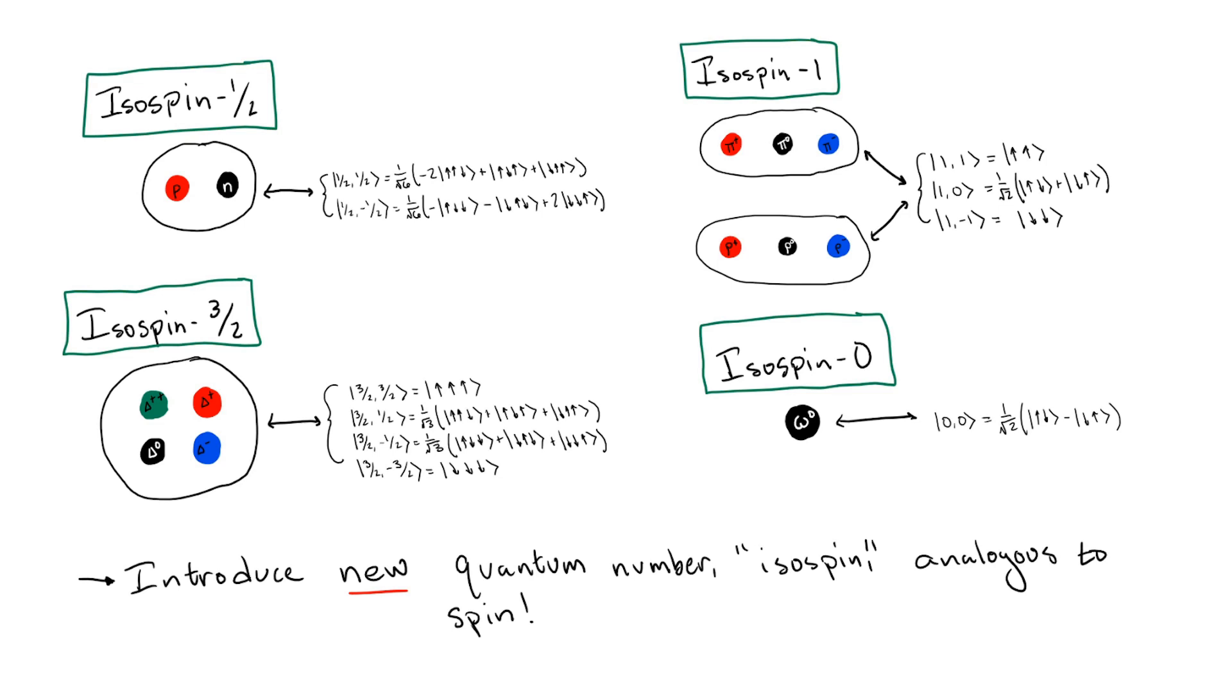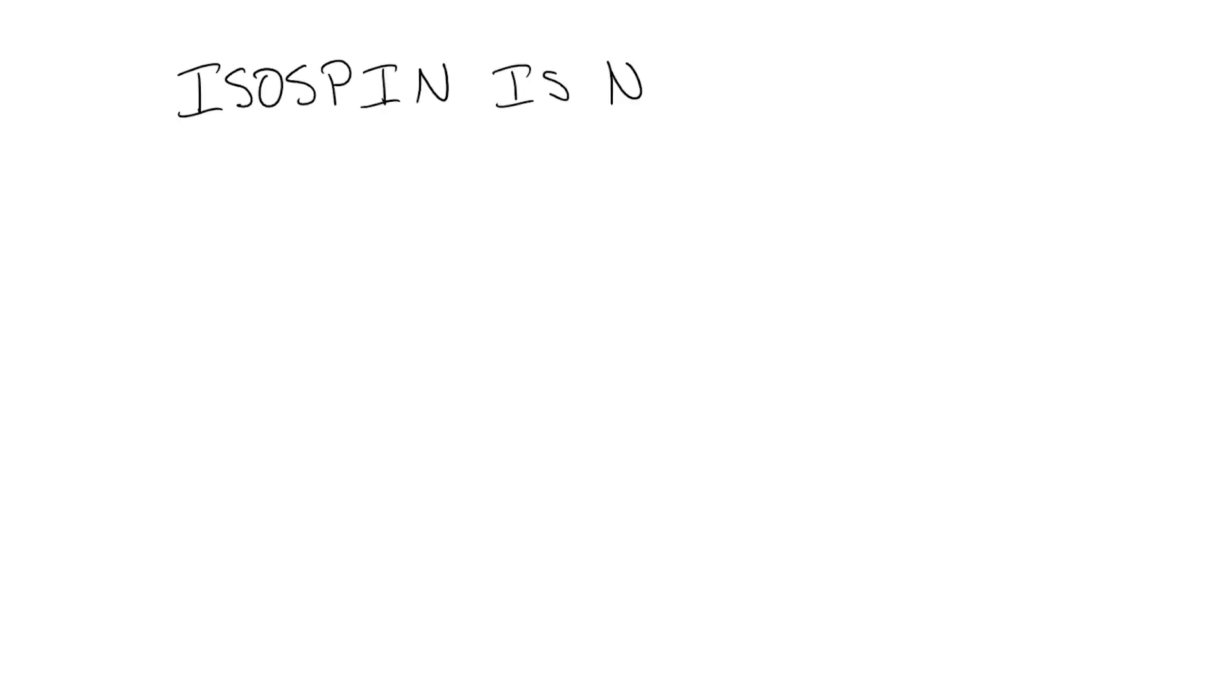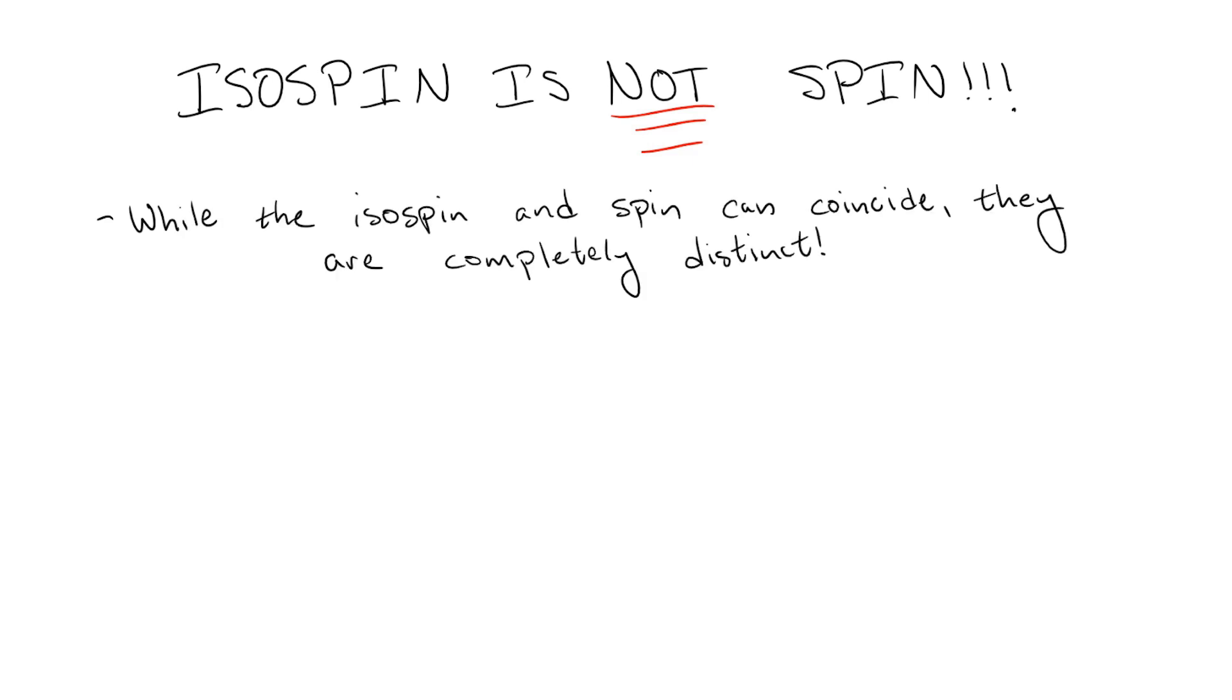Here I want to take a moment to reiterate. It's very important to not confuse isospin and spin. While the total isospin of a particle and the total spin of a particle sometimes coincide, such as the case of the nucleons, delta baryons, and rho mesons, these quantum numbers are completely distinct.